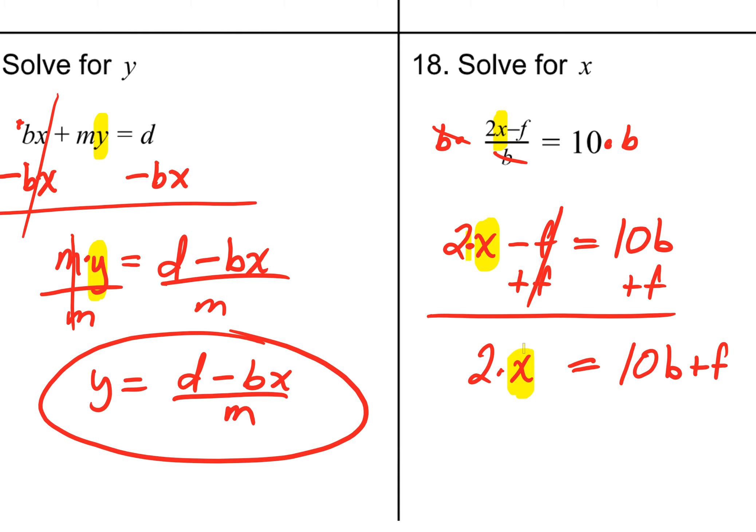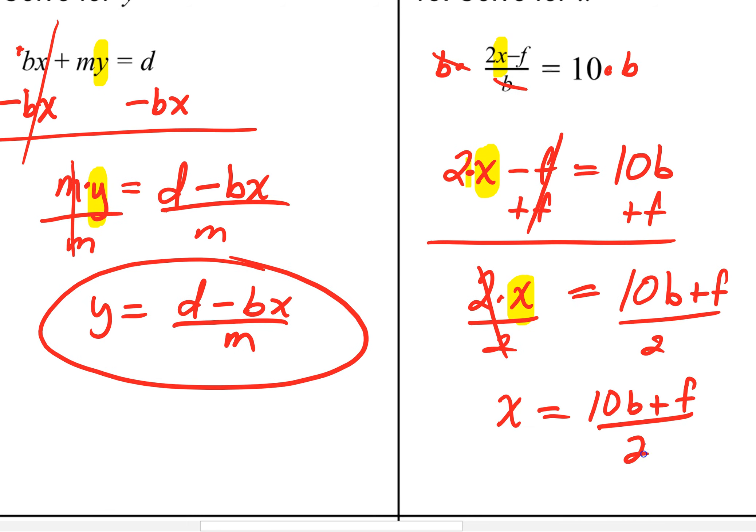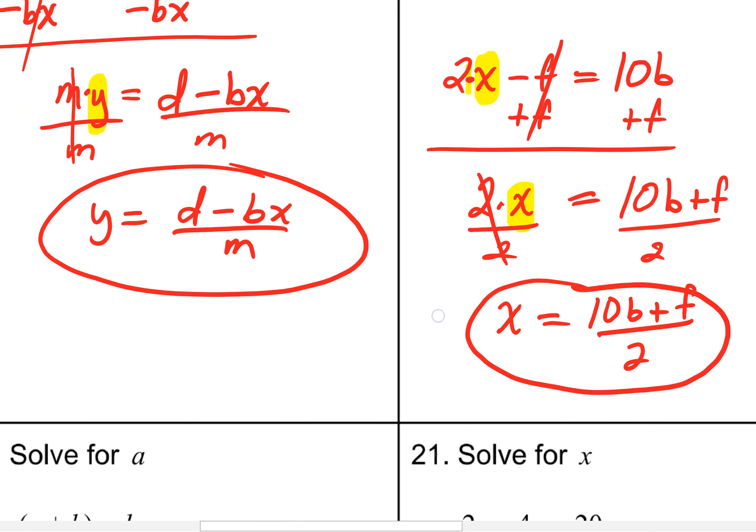Now, we're not done. But the right-hand side, we cannot combine like terms. We can't simplify that. It's just going to be 10b plus an f. We're one step away, however. When we're looking right here, 2 times x, we just want to see the x. We want to get rid of that multiplication of 2. The inverse operation of multiplying by 2 is to divide by 2. So, your final answer will be this 10b plus f, and then you divide by 2.